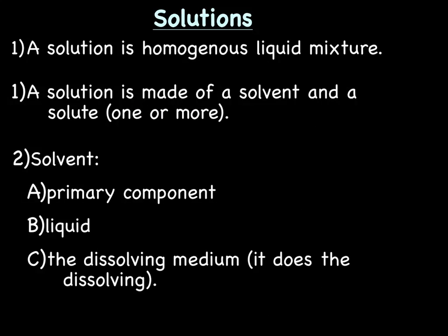Let's start with a really quick review on solutions. A solution is a homogeneous liquid mixture. A solution is made up of two things: a solvent and then one or more solutes. The solvent in a solution is the primary component — it's a liquid and you can think of it as the dissolving medium, the thing that does the dissolving. For example, if we were going to make salt water, the water would be the solvent.